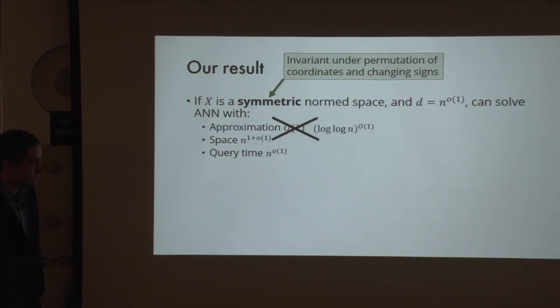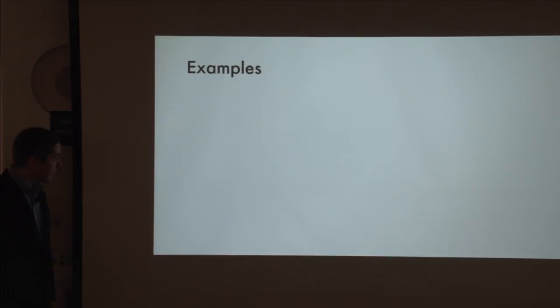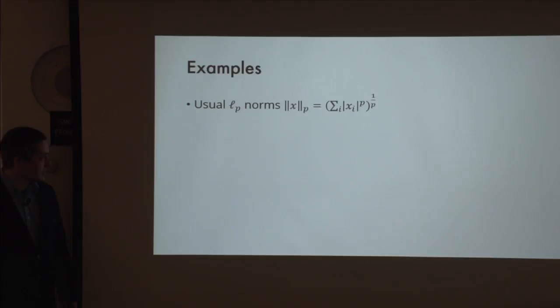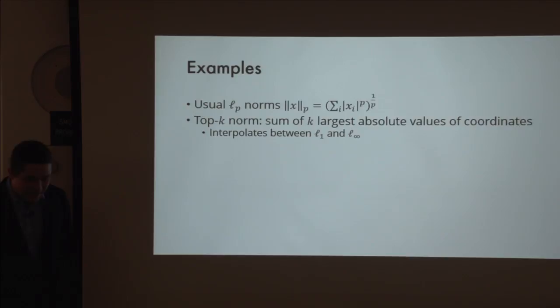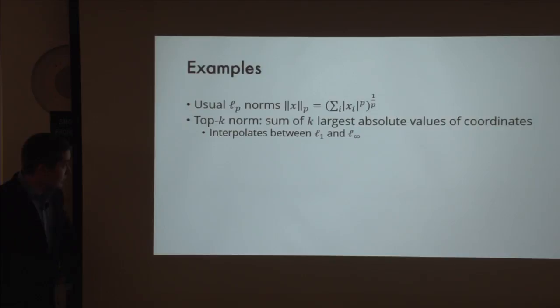Let me show examples of symmetric norms. The most canonical example is the usual L_p norms—sum of p-th powers to the power 1/p—which are clearly symmetric. The second example, which plays a central role, is the top-K norm: take your vector, take K largest coordinates in absolute value, and sum them up. If K equals one, this is L-infinity norm; if K equals dimension, it is L_1 norm. So it is an interpolation between L_1 and L-infinity.